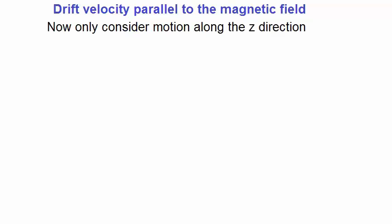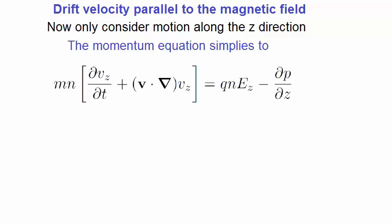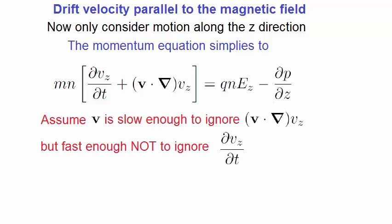Let's now look at the drift velocity parallel to the magnetic field. If we consider motion only along the z-direction, then the momentum equation simplifies to this, where all the terms are along the z-direction. Again, here we assume that V is slow enough to ignore, so the second order term, the so-called convective term, disappears, but V is still fast enough not to ignore the dV dt term. This is not entirely unreasonable, since in a plasma, particles will drift much faster along a magnetic field than at right angles to it.